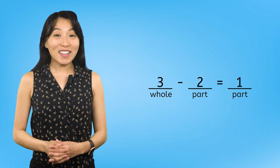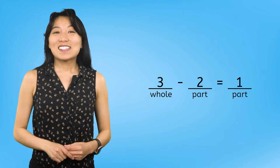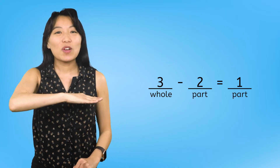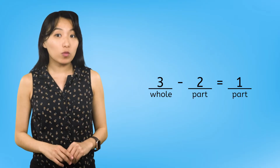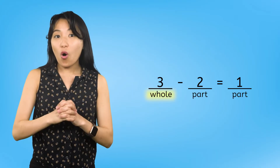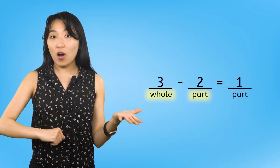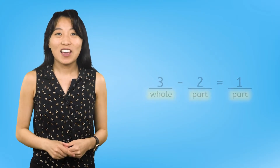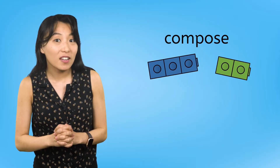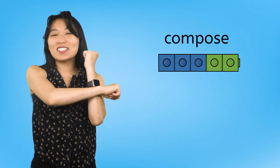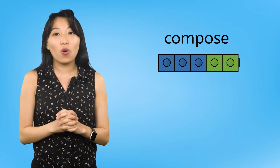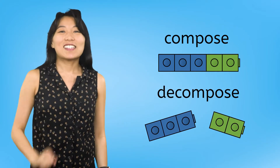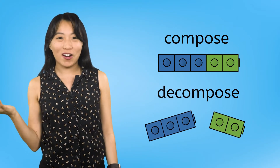We can use subtraction to help us decompose numbers. Subtraction sentences always follow a pattern: whole minus part equals part. We just composed a number using addition to help us find the missing whole, and decomposed a number using subtraction to help us find the missing part.